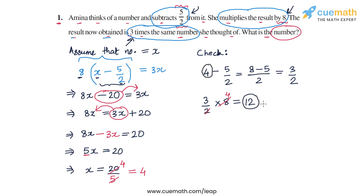So this checks out, this aligns with what is said in the problem statement. Hence the answer x equal to 4 is correct. The number that Amina thought of is 4. And this completes question number 1.